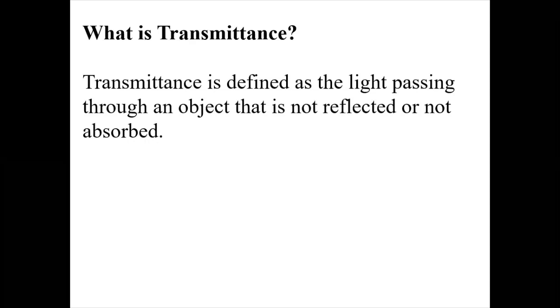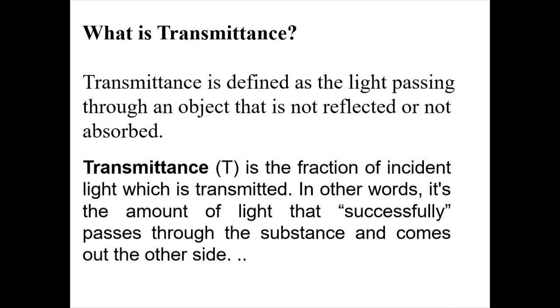You may know about this, but we are repeating: what is transmittance? These terms are related to our answer. Transmittance is defined as the light passing through an object that is not reflected or not absorbed. In other words, transmittance is the fraction of incident light which is transmitted. In simple words, it's the amount of light that successfully passes through the substance and comes out the other side.